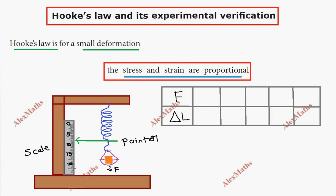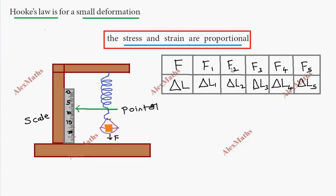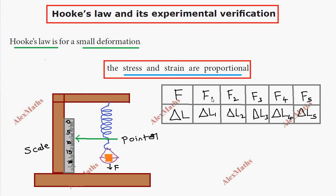Suppose we have a force value F1, we get an elongation delta L1. Similarly, different force values give different elongations. We record all these in a table, and then we plot a graph from this table.